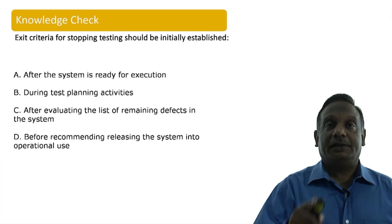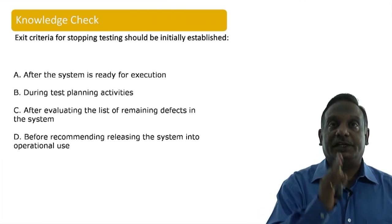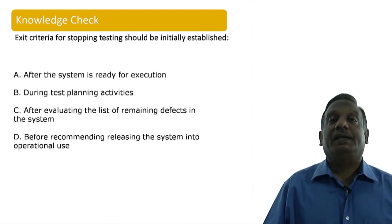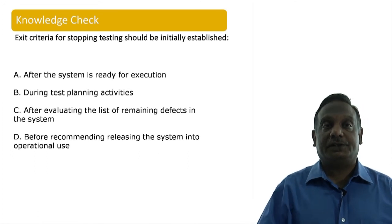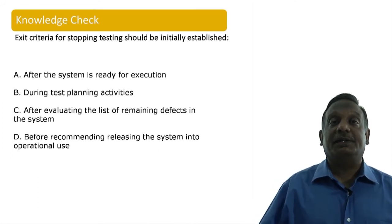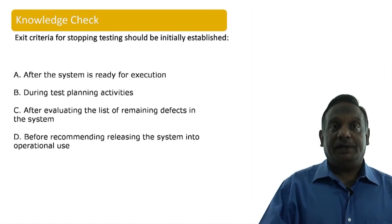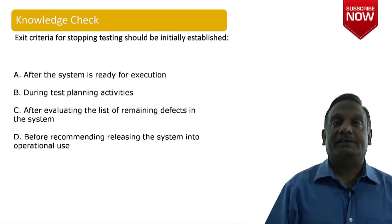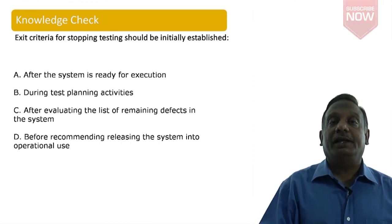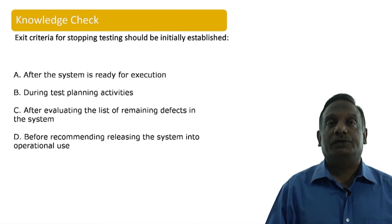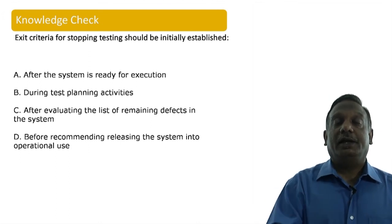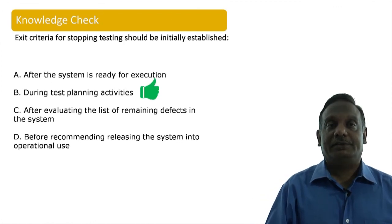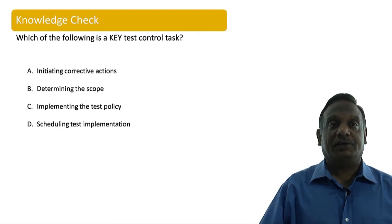Before we conclude, let us do a knowledge check on your understanding of planning and control. The question is: exit criteria for stopping testing should be initially established when? A — after the system is ready for execution; B — during test planning activities; C — after evaluating the list of remaining defects; D — before recommending releasing the system into operational use. When will you set your exit criteria? Yes, the correct answer is B — during the planning activities.